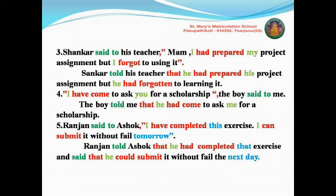See the fifth sentence now: 'Rangan said to Ashu, I have completed this exercise. I can submit it without fail tomorrow.' See what type of sentence is given here — statement. Two sentences, both are the same type — statement only, no identification needed. Reported verb changes: 'said to' will be changed into 'told', and remove the open quotation. Instead, write the conjunction word 'that' for the statement sentence. 'I' will be changed — the pronoun changes to 'he'.